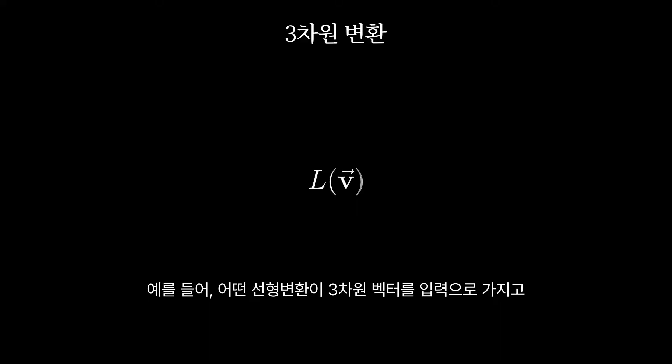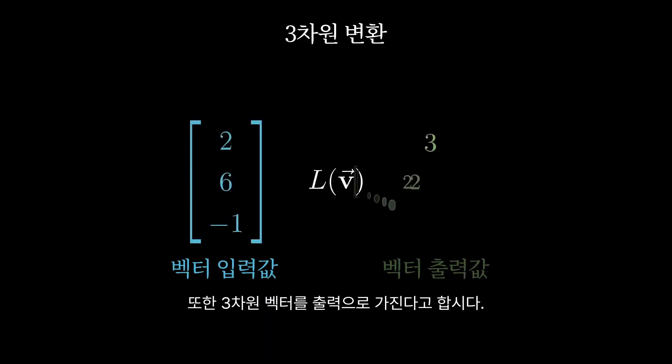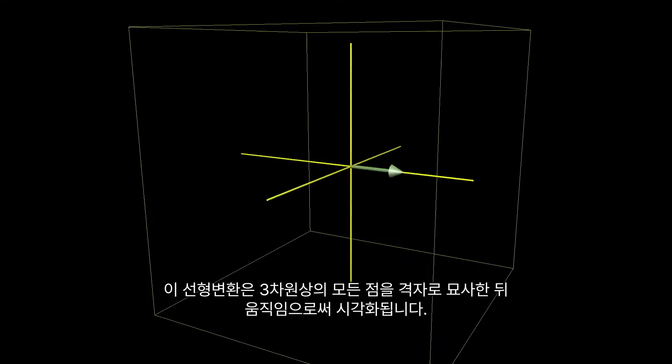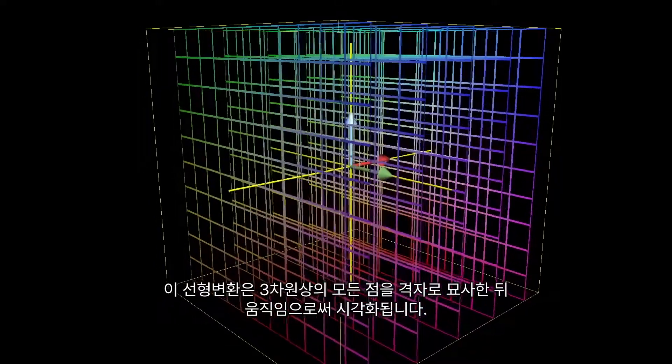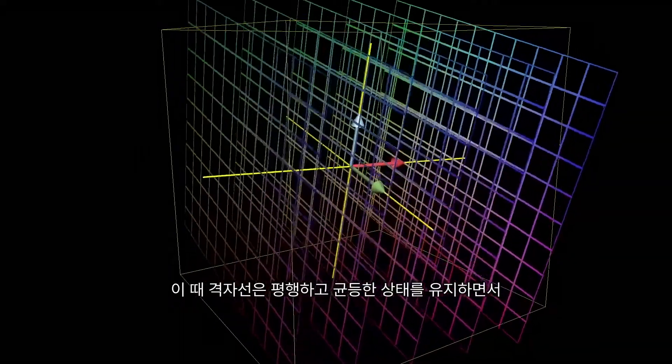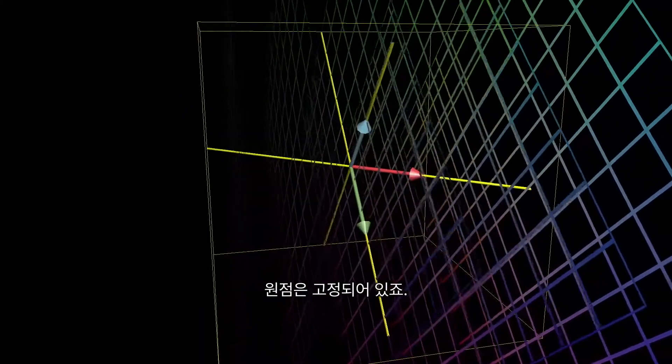For example, consider a linear transformation with three dimensional vectors as inputs and three dimensional vectors as outputs. We can visualize this by smooshing around all the points in three-dimensional space, as represented by a grid, in such a way that keeps the grid lines parallel and evenly spaced, and which fixes the origin in place.